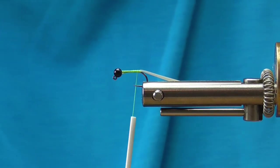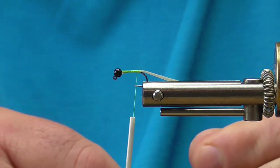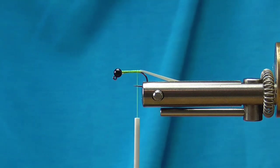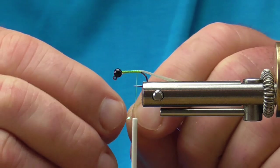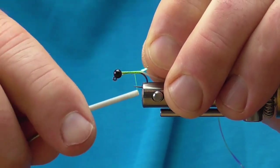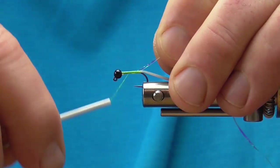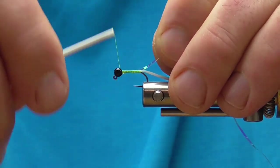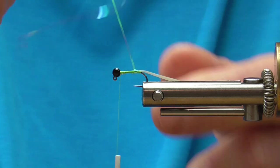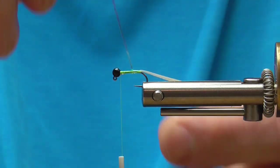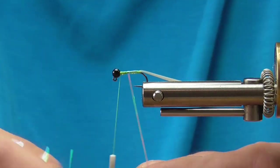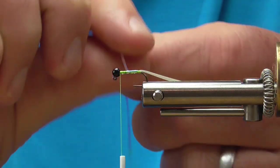The next thing I'm going to tie in is a piece of medium pearl tinsel. I'm just going to tie this in at the back here and wrap forward behind the bead and begin overlapping this, wrapping up with the tinsel, getting full coverage on our thread.